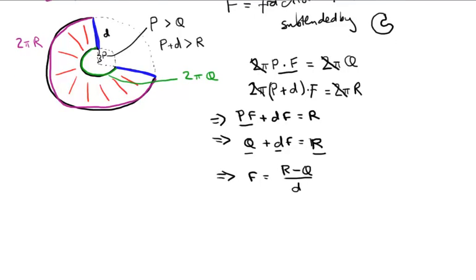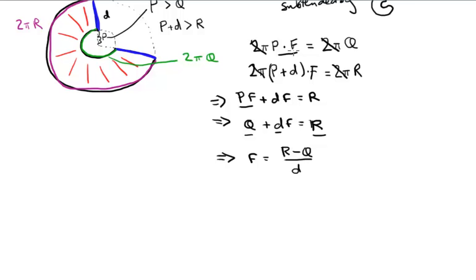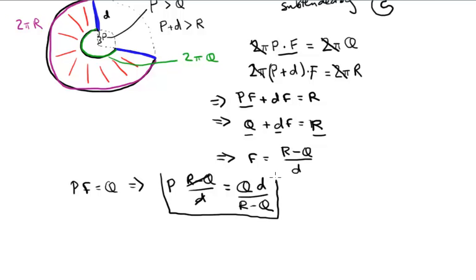So how do we work out p? Well, we know p times f equals q. So pf equals q implies that p times, well, this is what f is, r minus q over d equals q. And rearranging, so we multiply by d, and we divide by r minus q. And we get p equals q times d over r minus q. So these are our two equations, two vital equations, telling us our unknown quantities in terms of our known quantities.